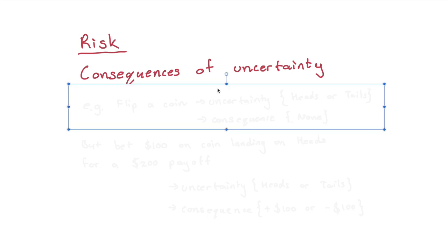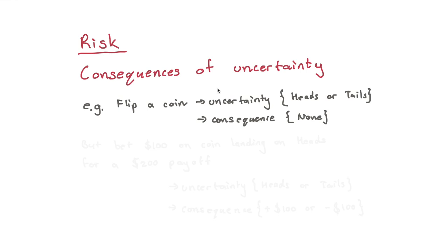A nice little example is that if I was to just flip a coin, there is uncertainty. It could be heads, it could be tails, but I don't really care what it lands on, so there are no consequences.